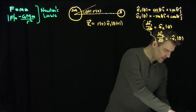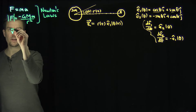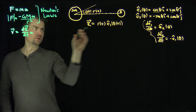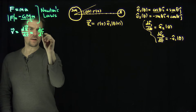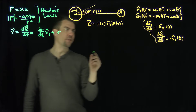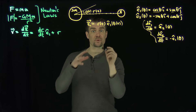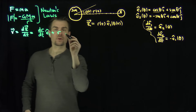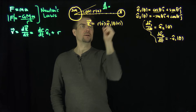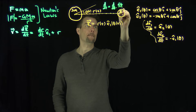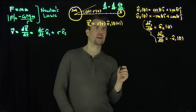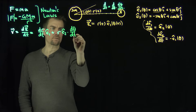So our velocity v = dR/dt equals (dr/dt) e1-hat, plus r times the derivative of e1 with respect to t. Using the chain rule, d/dt = (d/dθ)(dθ/dt), the theta-derivative of e1 is e2, so we get r · e2-hat · (dθ/dt). That's the velocity.